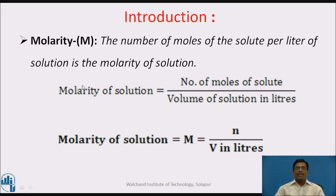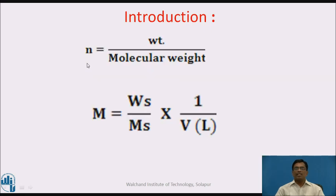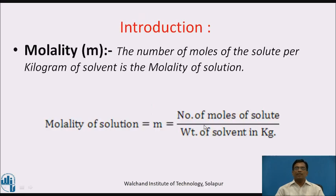Molarity is represented by capital M. It is defined as the number of moles of the solute per liter of solution. Mathematically, molarity M is equal to number of moles of solute divided by volume of solution in liters, that is M = n / V. The number of moles n is calculated as weight of solute divided by molecular weight of solute. So overall, M = (weight of solute / molecular weight of solute) × (1 / V in liters).